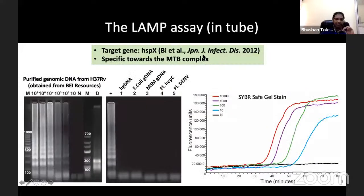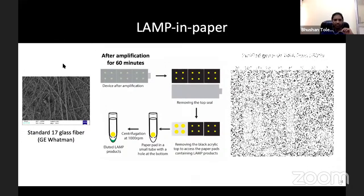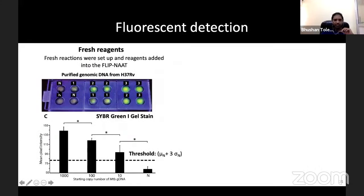The user adds purified DNA into the device, seals it, and places it in an incubator set to 63°C for 60–80 minutes. Afterward, you open the top seal, add a fluorescent dye, close the cover, flip it, and do low-cost fluorescence imaging using just a UV torch and a cell phone. In the absence of TB DNA you see no signal; an increasingly bright green signal appears as more TB DNA is present. We adopted a LAMP assay from a 2012 publication specific to the MTB complex, detecting as few as 10–100 copies of TB DNA.